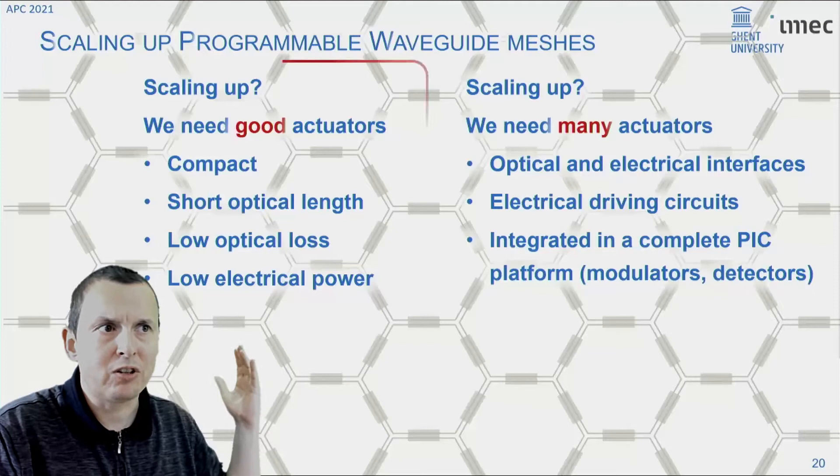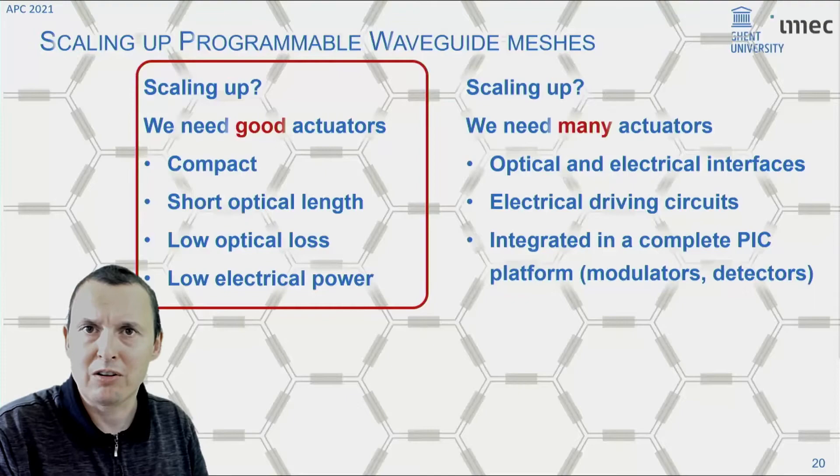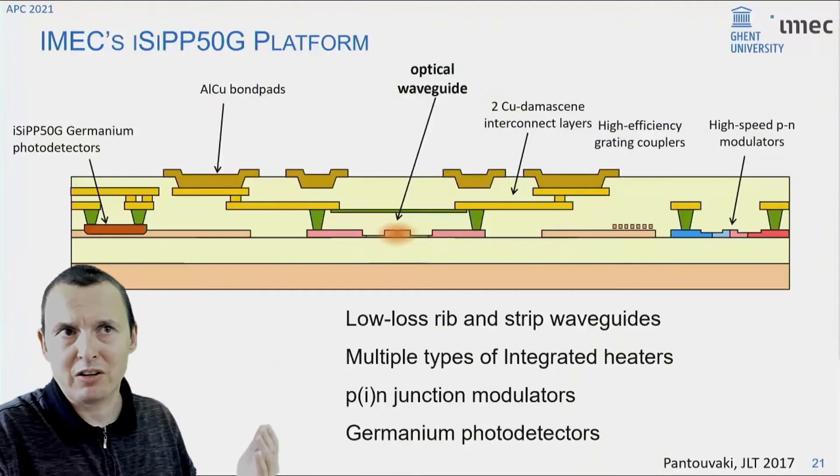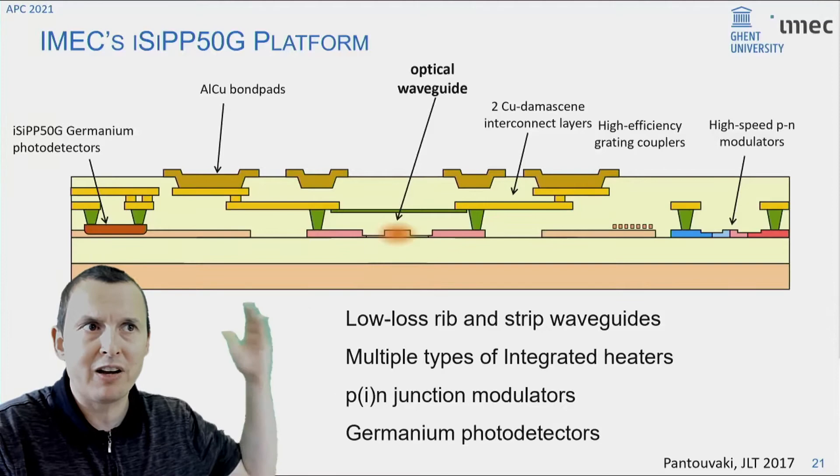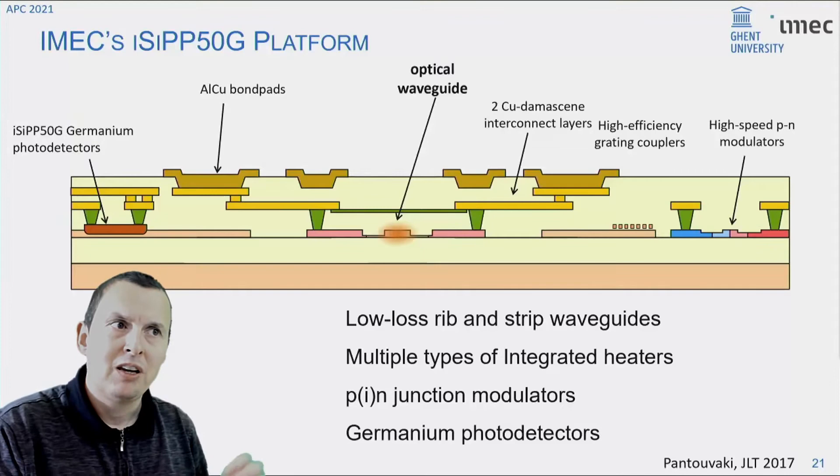Well, first, you need really good phase shifters and tunable couplers. They need to be compact, have a short optical length, a low optical loss, and preferably consume little or no electrical power. On top of that, you need to be able to integrate many of those on the same chips, so they all need to work, they all need to be connected to the electronics, and they need to work together with the existing components on the circuit, like high speed modulators and detectors.